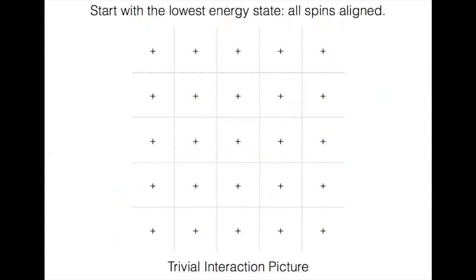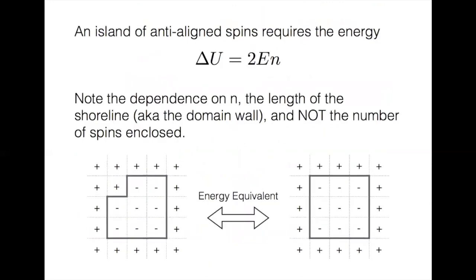I start with the lowest energy state, which is all spins aligned, and this is a trivial interaction picture. I show it here for a 5 by 5 lattice.